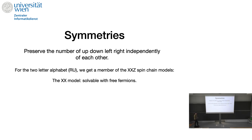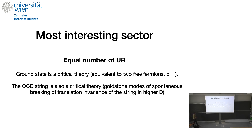For the two-letter case, you get a nearest-neighbor spin chain that preserves the U(1) symmetry — the number of up, down, left, right independently. This needs to be a member of the XXZ spin chain family. You figure out which one it is, and it turns out to be the XX model.